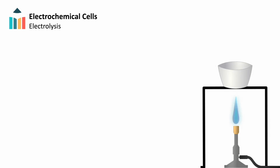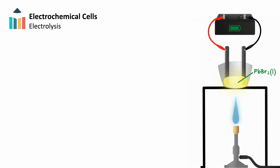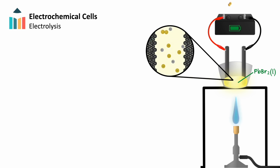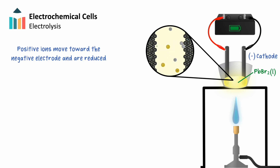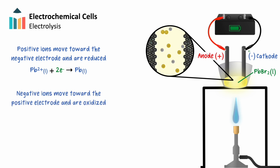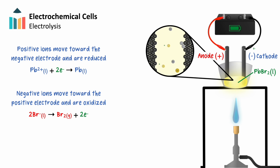In this example, we'll use a Bunsen burner to melt a salt and use it as our molten electrolyte. Solid lead(II) bromide will melt into a molten mixture of lead and bromide ions. We'll use inert graphite electrodes to pass current from our external power source into the molten ionic salt. This causes ions to move toward the electrode of opposite charge. Positive ions move toward the negative electrode, gain electrons, and are reduced — at the cathode, we see the reduction of lead cations. Negative ions move toward the positive electrode, lose electrons, and are oxidized — at the anode, we see the oxidation of bromide ions. These ions have been discharged, converted to neutral elements at their respective electrodes, from which they can be collected.